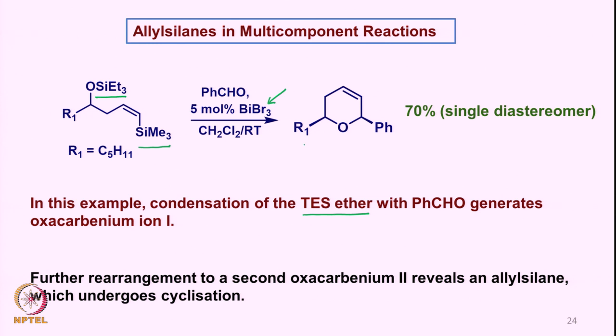And it gives interestingly such a product which is a single diastereomer. As you can see, these substituents are pointing in the same direction, that is the beta direction. Now the rationalization of this reaction has been done, which leads to a so-called oxocarbonium ion 1, which I will discuss.